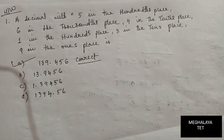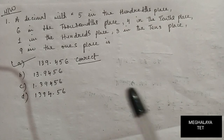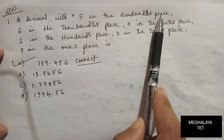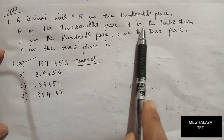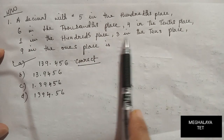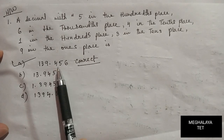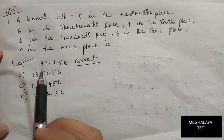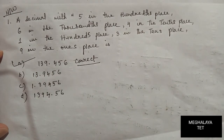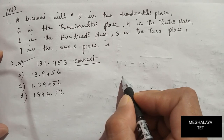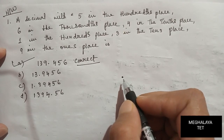Hello friends. I have already completed one question, and the second question is based on the same formula we used. The second question is: a decimal with 5 in the hundred place, 6 in the thousand place, 4 in the tenth place, 1 in the hundred place, 3 in the tenth place, and 9 in the ones place. These are the four options and we have to find out the correct answer.